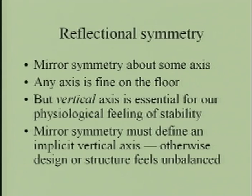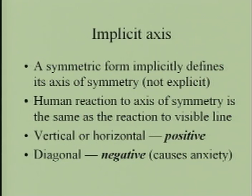A vertical axis is essential for our physiological feeling of stability — therefore mirror symmetry must define a true vertical axis, otherwise the design feels unbalanced. Many times reflectional symmetry does not show its axis explicitly, yet the human brain immediately does the computations in a fraction of a second and defines that axis implicitly. If it's not true vertical, it causes anxiety.